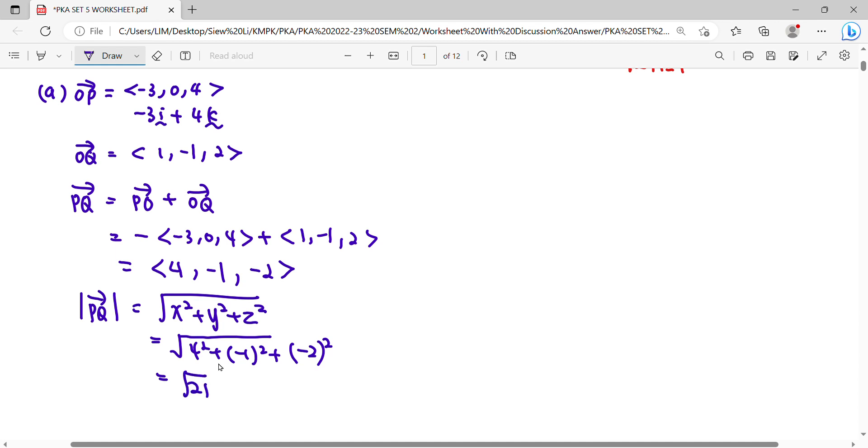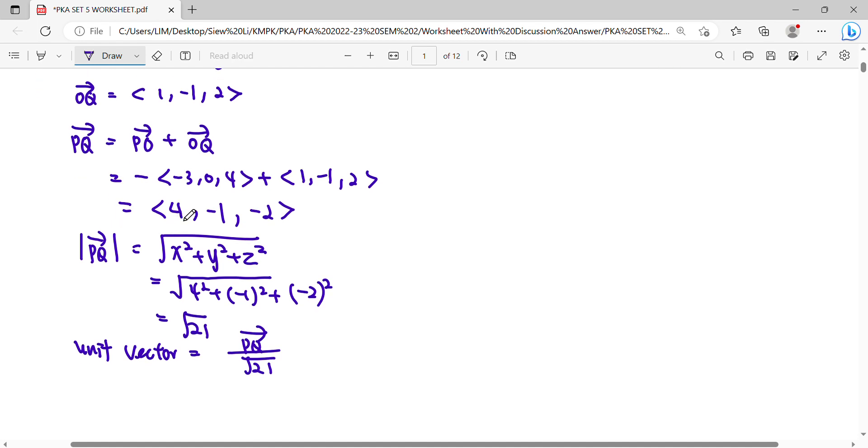Finally, substitute into the formula. Unit vector is vector PQ over magnitude. You need vector PQ divided by magnitude. It will be 4 over square root 21, i. Then negative 1 over square root 21, j. Your vector has to be written clearly how many i, how many j, how many k.